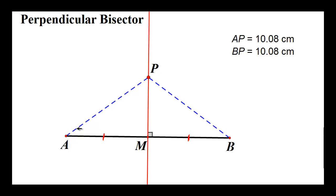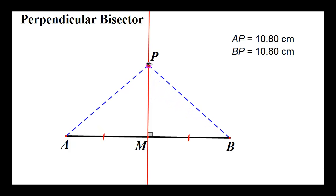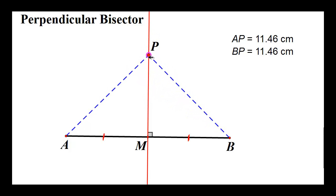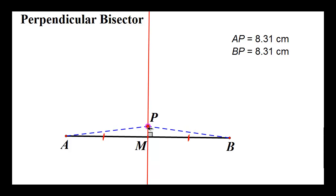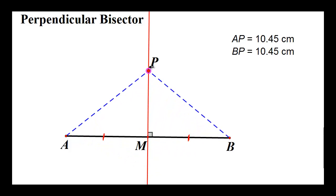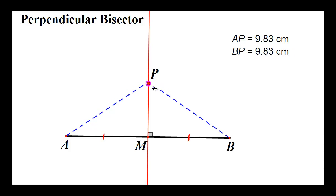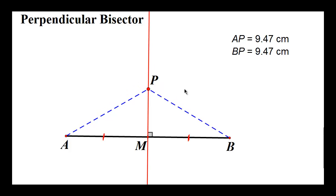When I measure from P to the other endpoint, it's also the exact same distance. That's called equidistant. So point P on the perpendicular bisector is equidistant from the endpoints, and no matter how I move it, as long as I stay on that perpendicular bisector, the distance stays the same.